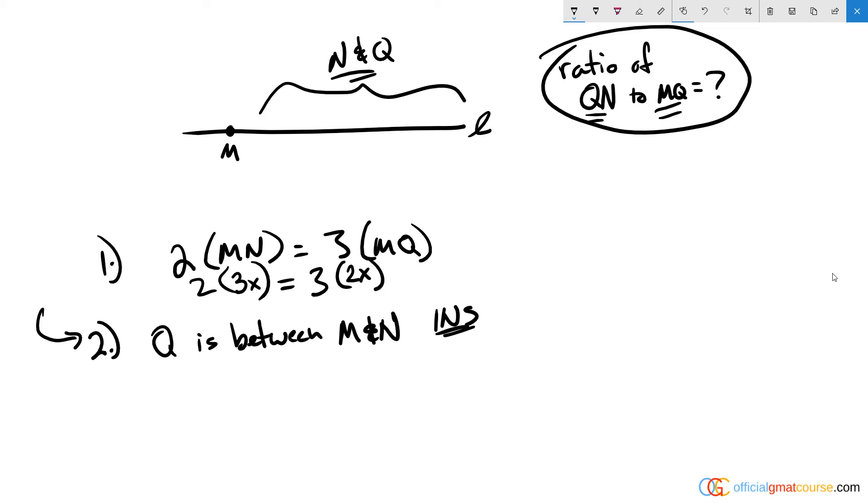So no matter what the x represents, we know that mn is equal to 3x when mq is equal to 2x. So the distance from m to n, if we draw this out, is 3x, and the distance from m to q is going to be two-thirds of that.